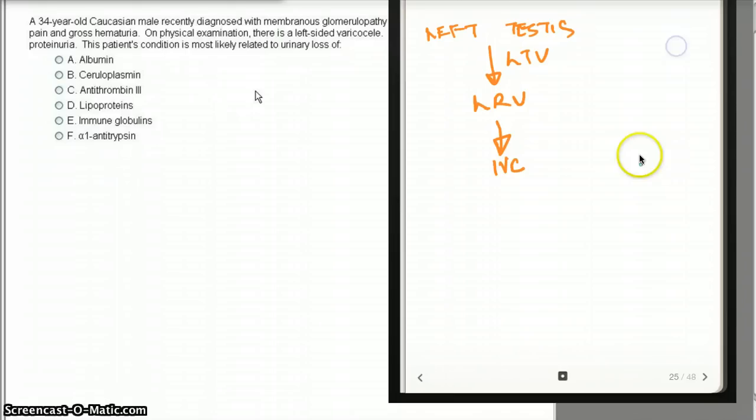That's the left side. Now, what's happening to the right testes? The right testes is going to directly drain into the inferior vena cava through the right testicular vein. It's going to skip the right renal vein.